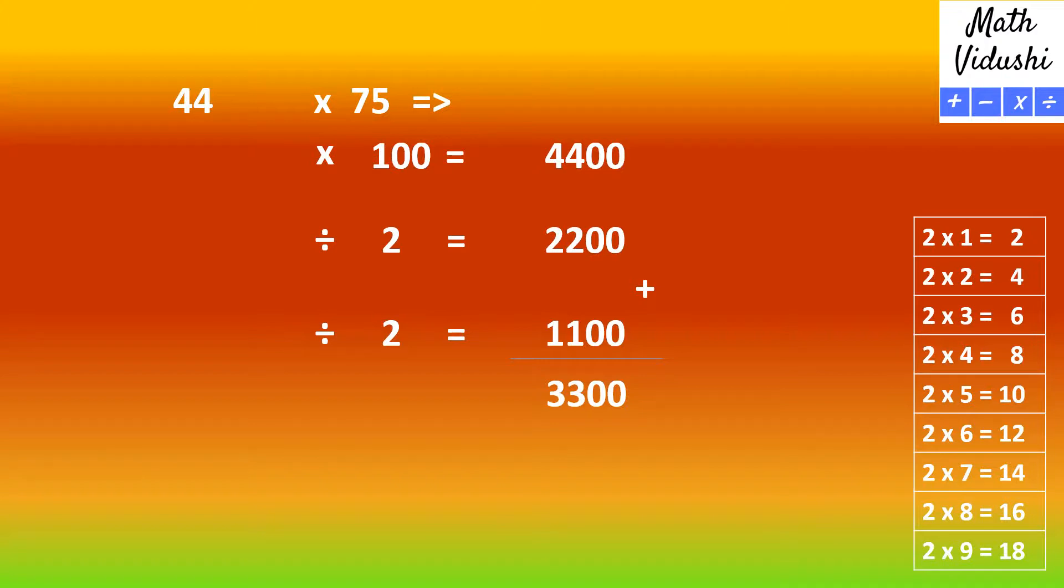So 44 multiplied by 75 is 3300. I hope you are getting the gist of it. Let's try another number.